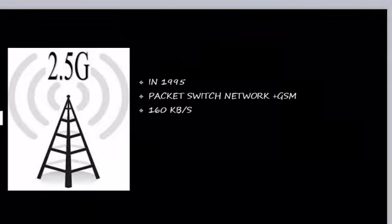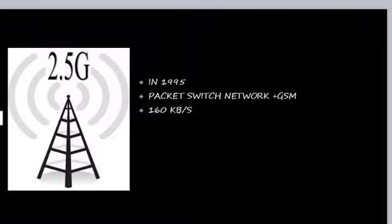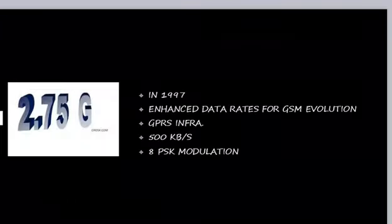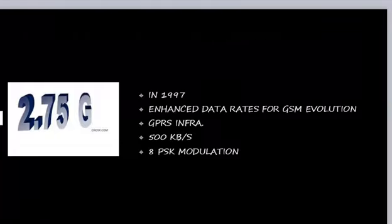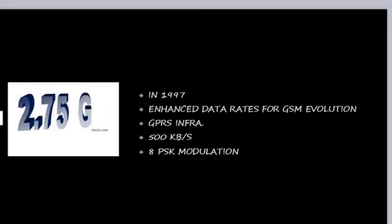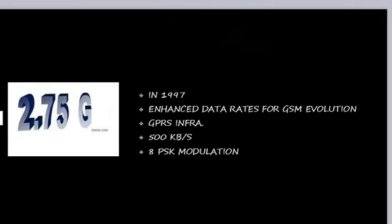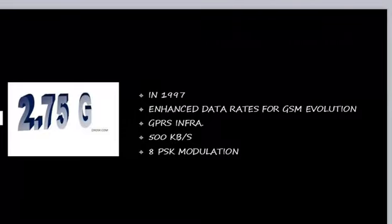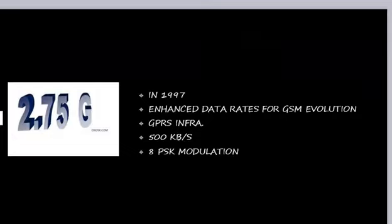2.5G was launched in 1995, combining packet-switched network plus GSM, with a data rate of 160 KB per second. 2.75G, launched in 1997, is also called EDGE (Enhanced Data Rate for GSM Evolution), uses GPRS infrastructure, has a data rate of 500 KB per second, and uses 8PSK modulation technique.